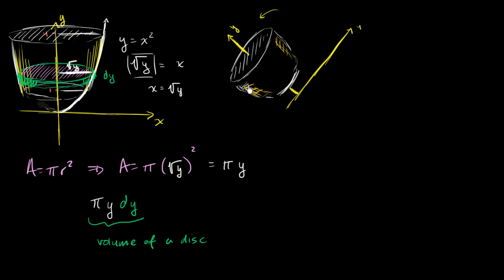If we want the volume of this entire solid, we just sum all of these disks for all y values between y equals 1 and y equals 4. We take the definite integral from y equals 1 to y equals 4. A definite integral is a very special type of sum — we're taking the limit as the dy's get smaller and smaller and we have a larger and larger number of disks. As they become infinitely small and we have an infinite number of disks, our sum doesn't just approximate the volume; it actually is the volume.